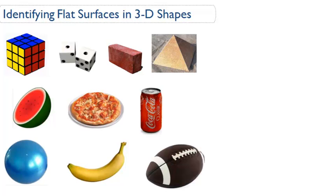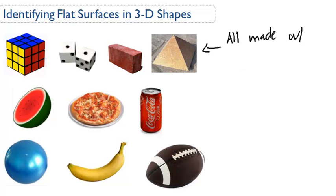In these first examples, you have a Rubik's Cube, a pair of dice, a brick, and a pyramid. All these shapes are made with flat surfaces.